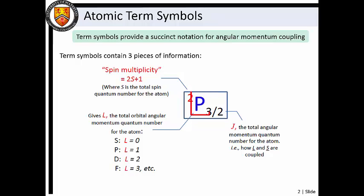The central term symbolizes L, the total orbital angular momentum quantum number. For L equal to 0, 1, 2, and 3, we have S, P, D, and F terms.